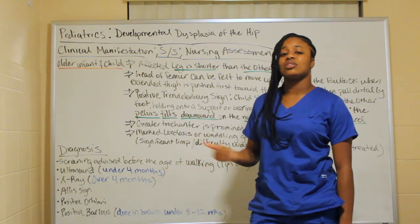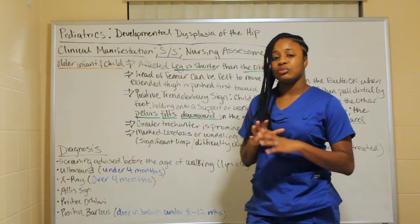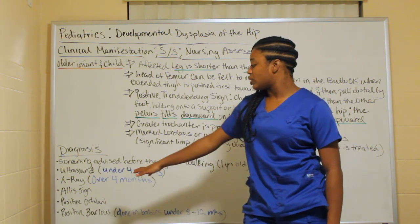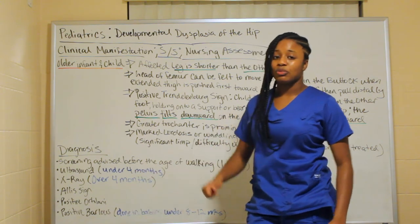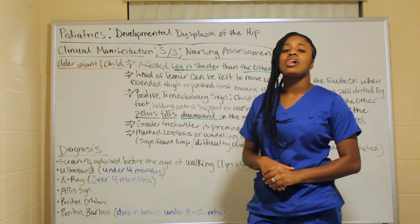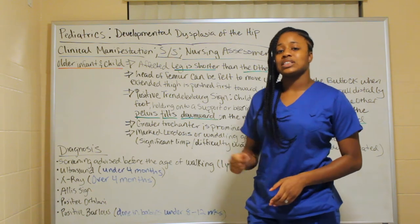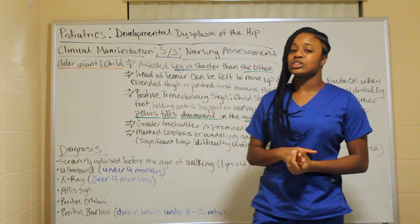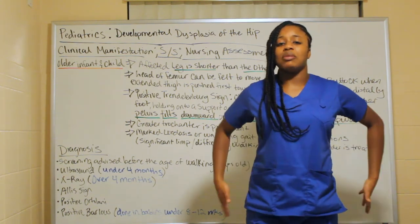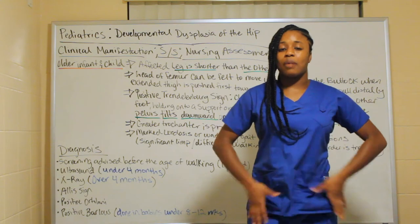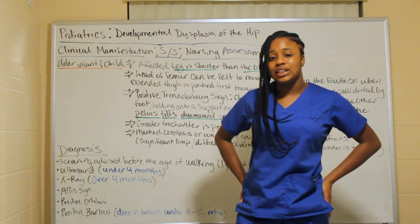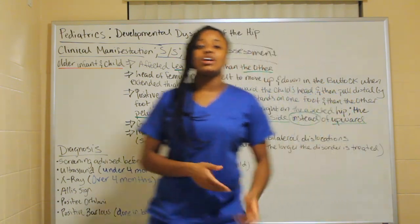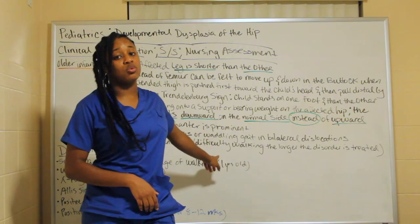The Barlow test is done in babies between 8 to 12 weeks. When performing the Ortolani test, do one leg at a time — this gives a more effective diagnosis than doing both bilaterally. The longer this disorder takes to be treated, the more complications occur, especially with walking.